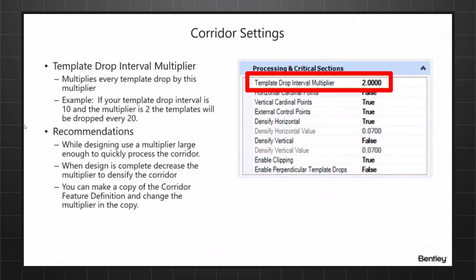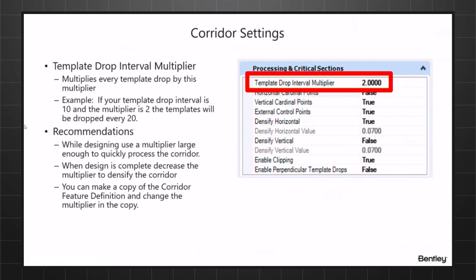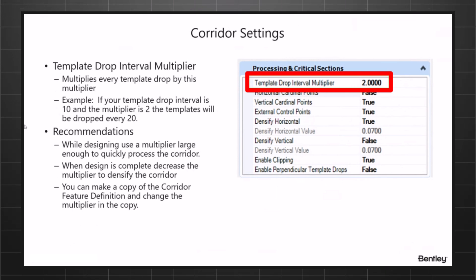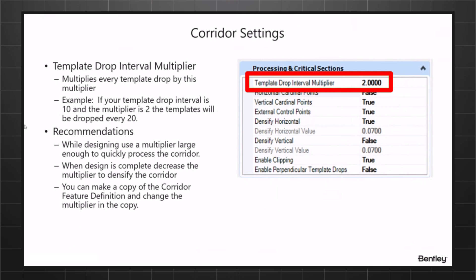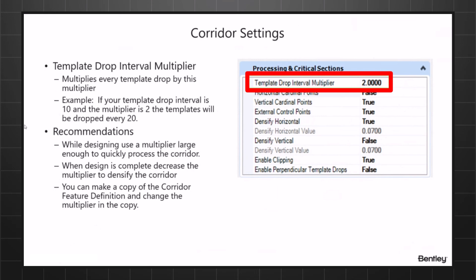Remember, the multiplier is applied to the corridor globally, and everyone using this feature definition will have that multiplier. If you change it, you'll need to make sure each corridor residing in that file is reprocessed.